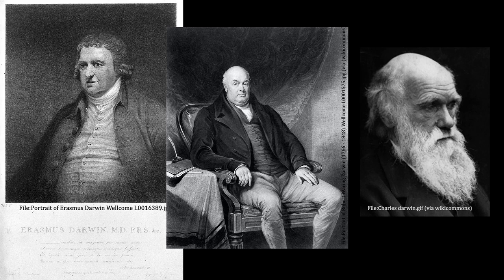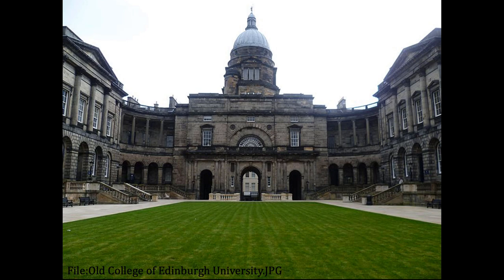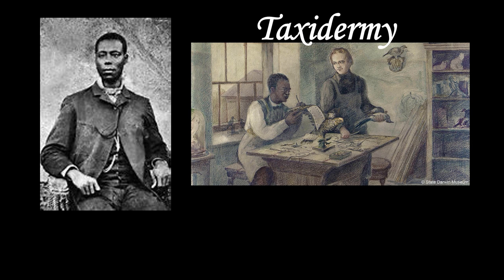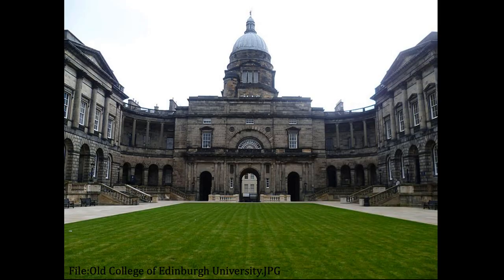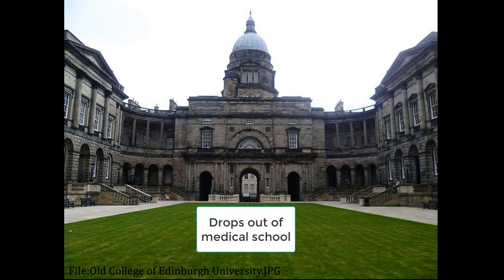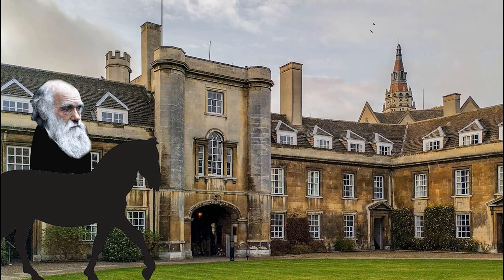Darwin was the fifth of six children, and he attended the Shrewsbury school as a child. Darwin started medical school at the age of 16 at the University of Edinburgh, but he found medical school to be boring, and although passing, he was not doing as well as expected. In one set of classes, Darwin learned taxidermy, the art and science of stuffing dead animals, from a freed slave named John Edmundston, who taught the subject at the University of Edinburgh.